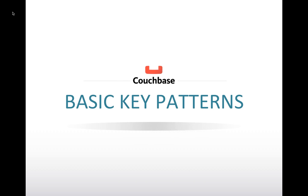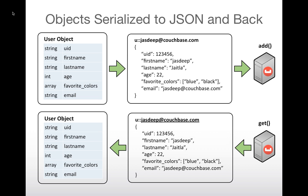Let's talk about basic key patterns used often in Couchbase. Typically the routine is: you have a user object with fields, serialize it to JSON, choose a key — for instance 'user::justdeep@couchbase.com' if I'm logging in with my email address — add it to Couchbase, and when someone logs in I know the key of their document. I do a get on that key, get the JSON back, and deserialize it back into a user object. You're serializing objects to JSON for storage, and deserializing JSON back into objects on retrieval.